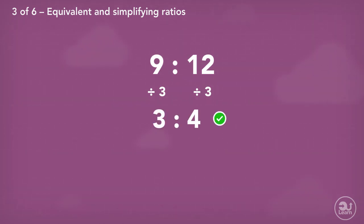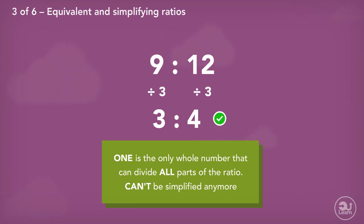We check our answer and see if there are any other factors both values can be divided by. One is the only whole number three and four can be divided by, so nine to twelve is simplified to three to four.